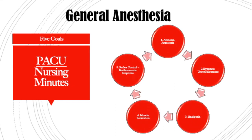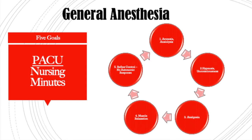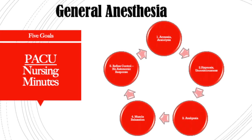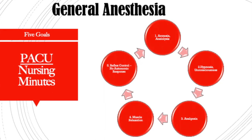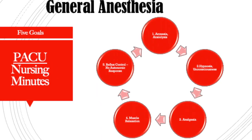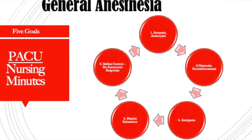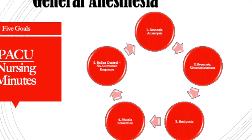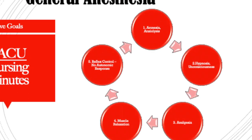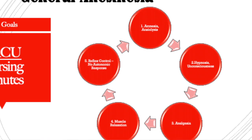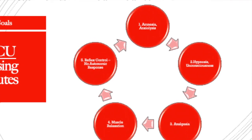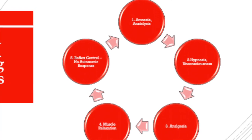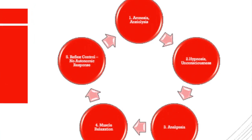Anxiolysis is usually begun in the pre-op phase when you meet your anesthesiologist. They typically have Versed and will give one to two milligrams IV in the pre-op phase to induce that beginning phase of anesthesia — sedation and anxiolysis. Then the second goal is unconsciousness and hypnosis. Once you get into the OR, the anesthesiologist will continue giving you more medicine to make you sleepier until you lose consciousness.